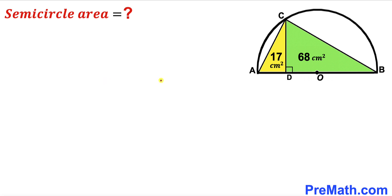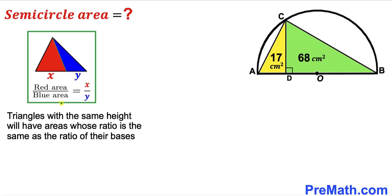Let's get started. To calculate the area of the semi-circle, we must first calculate its radius. Here's a crucial factor: triangles with the same height will have areas whose ratio is the same as the ratio of their bases. As shown in the diagram, for a red triangle and blue triangle with bases x and y respectively, the ratio of their areas equals x to y, since their heights are the same.